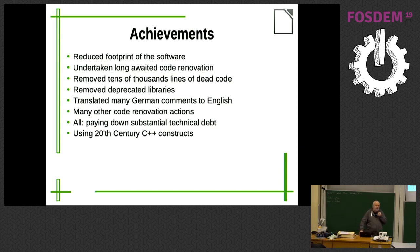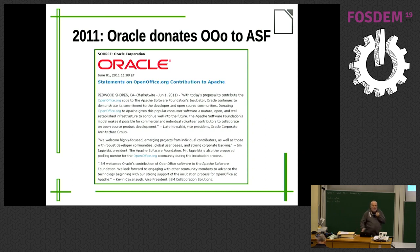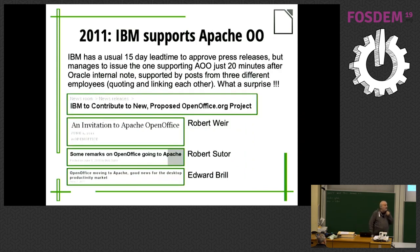Then what happened — in 2011, when we created the foundation, we invited all stakeholders to be members. Their answer was to donate OpenOffice to the Apache Foundation. People think this was an Oracle move, but just ask a few questions: IBM usually takes 15 days to write a press release, yet within 20 minutes of OpenOffice being donated to Apache, they issued a press release, three blog entries quoting and linking to each other.